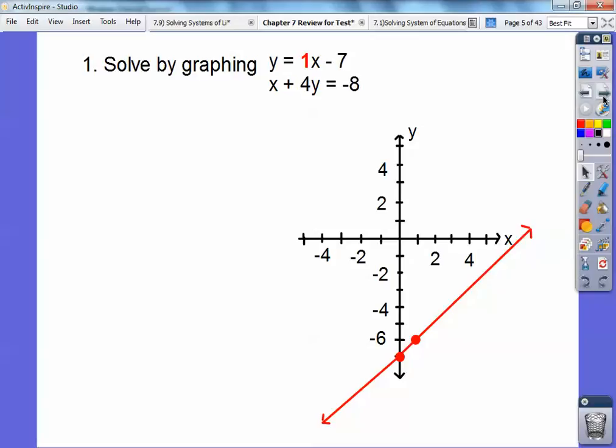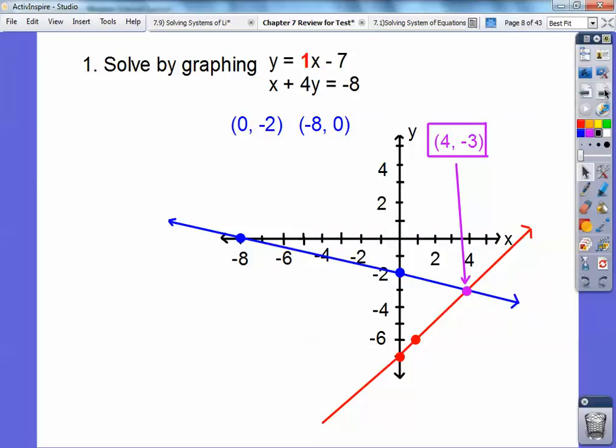Okay, now let's do the next one. I'm going to do zeros. When x equals 0, 4 goes into negative 8, negative 2 times. And when y equals 0, you're just left with x equals negative 8. So when I graph (0, -2), that's going to be down here. And (-8, 0) is going to be over here. We're going to have to extend that axis right there. And it looks like they're intersecting right there, about over 4, down 3. In fact, that's the correct answer, (4, -3).